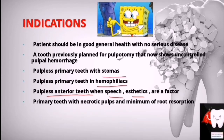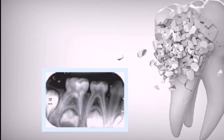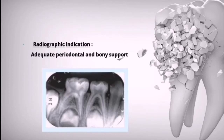Another indication is primary teeth with a necrotic pulp and minimal root resorption. The radiographic indication for pulpectomy is when there is adequate periodontal and bony support.